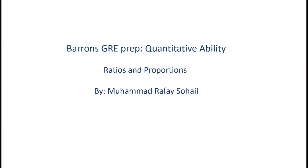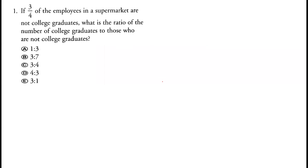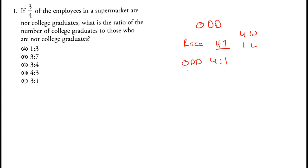Today we'll be starting with ratios and proportions. My name is Muhammad Rafain. Before starting with the first question, I need to explain something about odds. For example, if there's a race and horse one wins four times and loses one time, the odd of winning is 4 to 1. The probability of winning would be four over five, since the total number of races is five. This is the basic concept.